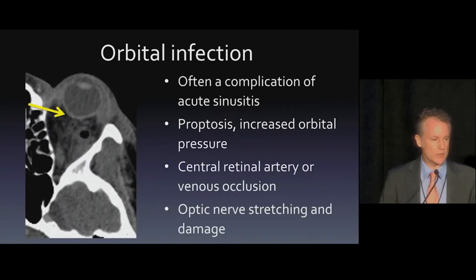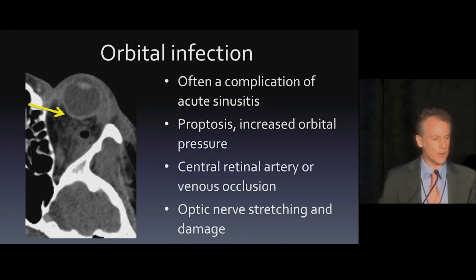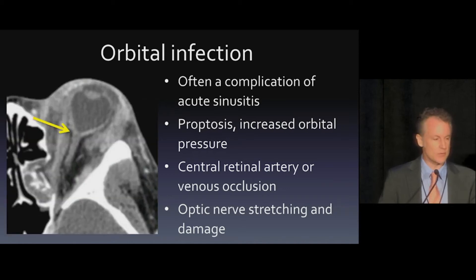Just a little bit more on orbital infections. Often a complication of acute sinusitis, part of the problem is it causes proptosis that increases orbital pressure. What we worry about is optic nerve stretching and damage, due to either central retinal artery or venous occlusion. If you have proptosis, look at the posterior aspect of the globe. As in this case, you see a little bit of what we call tenting in the back of the globe — that's when pressure is pushing the orbit out and straightening the optic nerve. When it gets really bad, as in this case of severe globe tenting, that's an ophthalmologic emergency. The referring clinicians need to know right away because they need to save the globe.